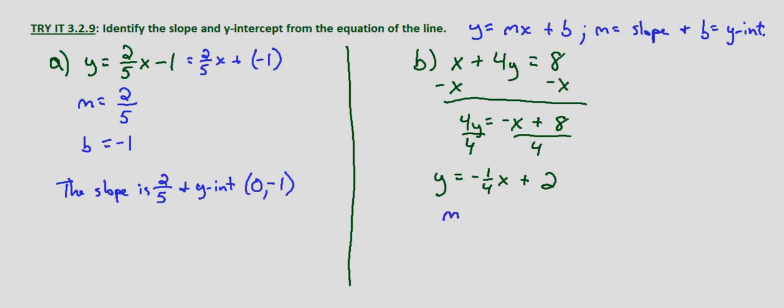So in this case m equals negative 1/4 and b equals 2. This means the slope is negative 1/4 and the y-intercept is 0, 2.